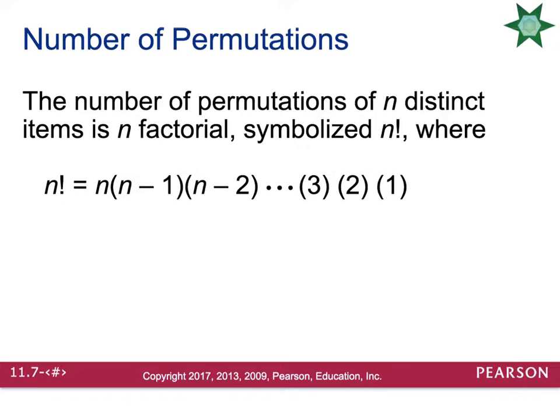When you go to calculate permutations, you're going to use what's called a factorial. And a factorial looks like an exclamation point. And all you do is you multiply down all the numbers in a row. So for example, if I asked you to complete seven factorial, you would take seven times six times five times four times three times two times one. Now the good news is your calculator will complete the factorials for you.